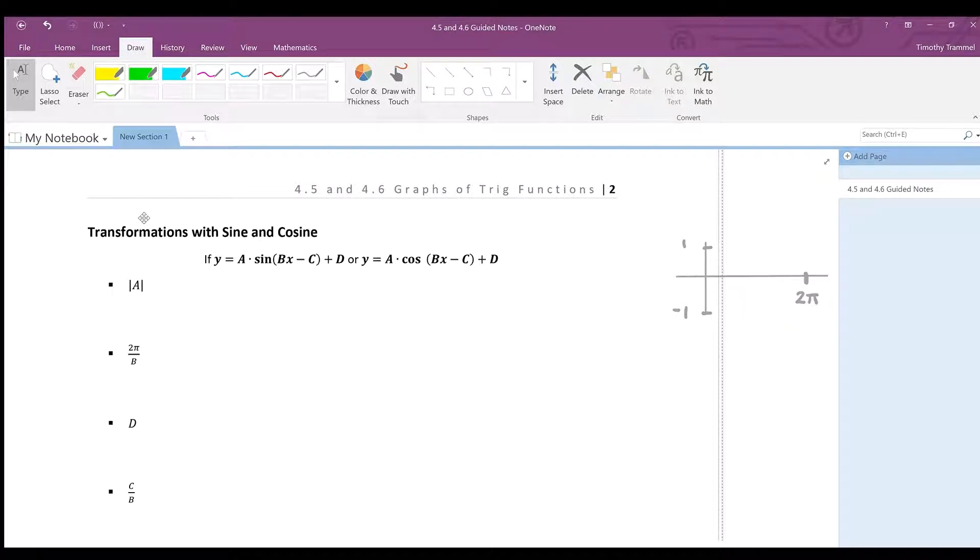Now that we've seen what the graphs of sine and cosine look like, let's figure out how to perform transformations on these functions, or how to graph transformations of these functions. And the first thing that I want to start off with is this number in front of each one of these trig functions, which we've called A. Well, if you take the absolute value of A, we call that the amplitude.